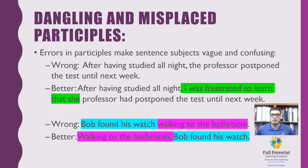A participle phrase usually acts as the descriptor or modifier. If left unchecked, however, it can lead to ambiguousness and confusion in the sentence towards a reader. For example: 'After studying all night, the professor postponed the test to next week.' This is confusing because it sounds like the professor studied for his own test. An addition must be made to the sentence in order to rectify this mistake.